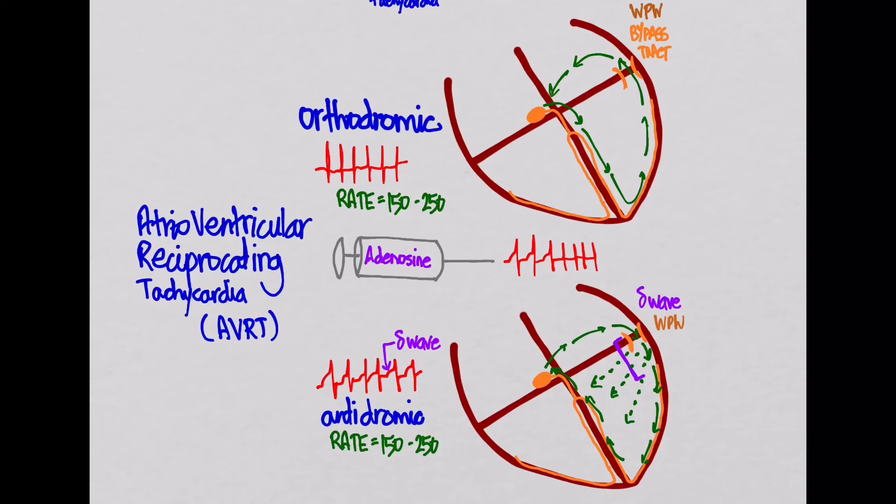Now, the danger is if you block the AV node in this case and there's WPW, you could end up with a very fast tachycardia of like 300 beats per minute, which may not be compatible with life. That happens because you've blocked this AV node over here, and so everything is going to go down this accessory path. There's no built-in delay here, so any signal that gets here is going to go down there quickly. It may be temporary since adenosine is so short-acting.